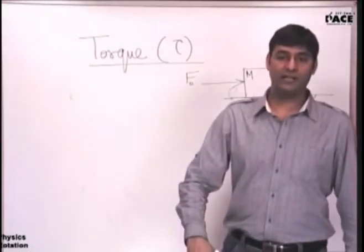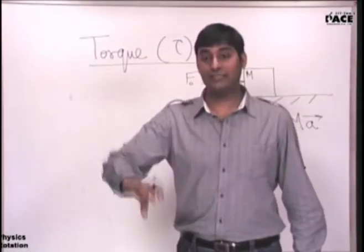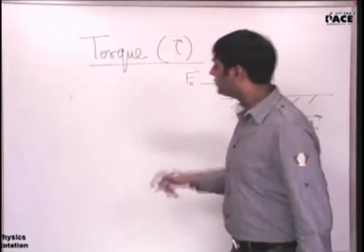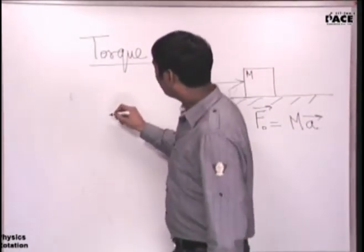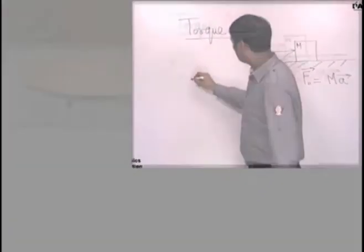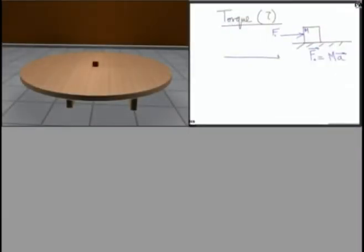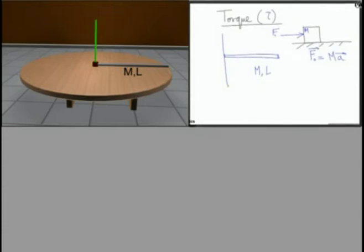Now let's go back to torque. Suppose I have a thin rod lying on a horizontal frictionless surface. M is the mass of the rod and L is the length. This rod is going to rotate about a vertical axis as shown. Please tell me: what is the moment of inertia of this rod about this axis?